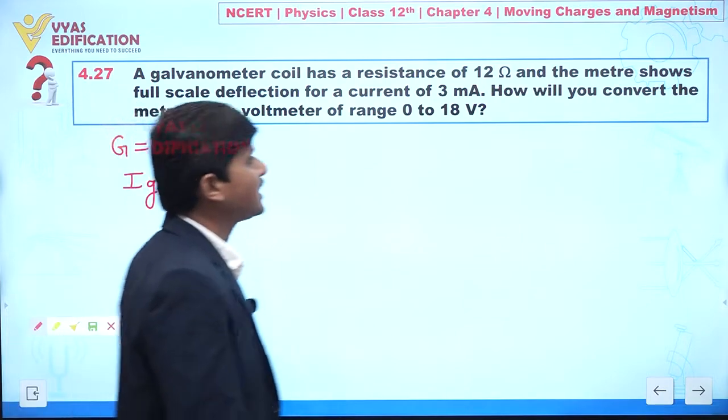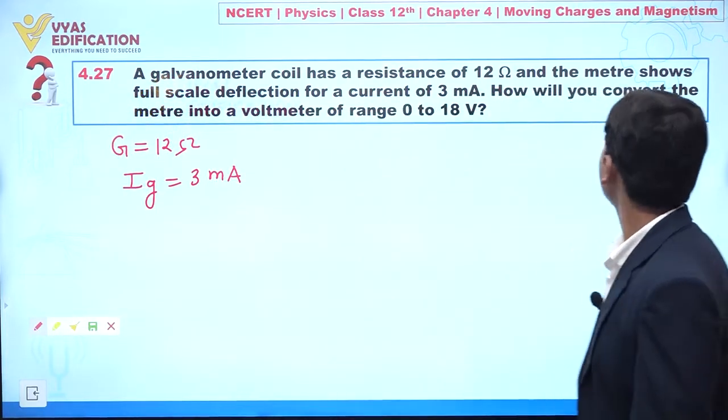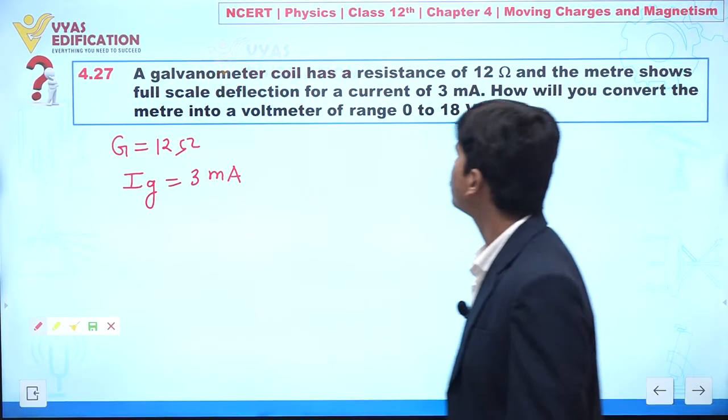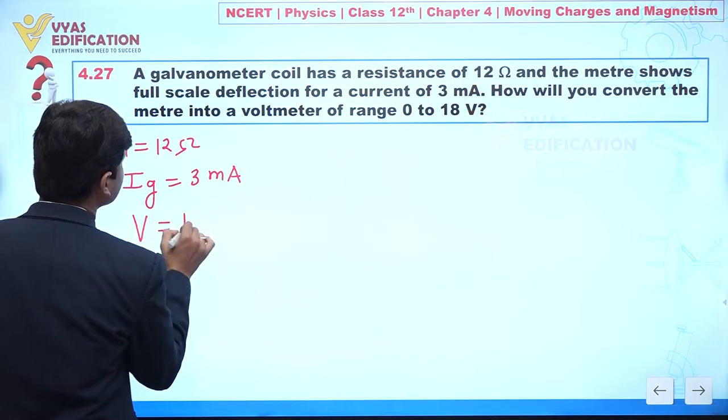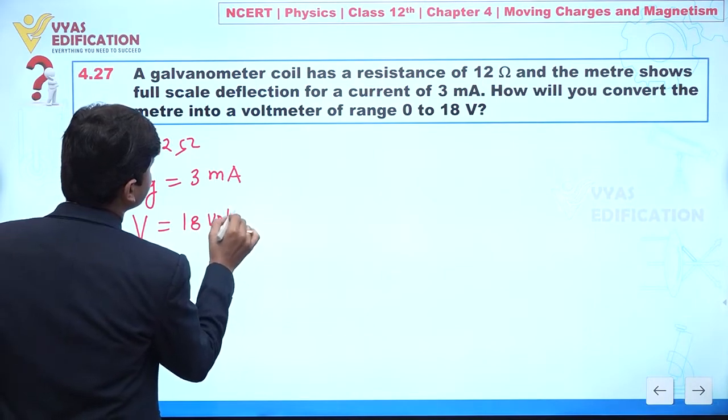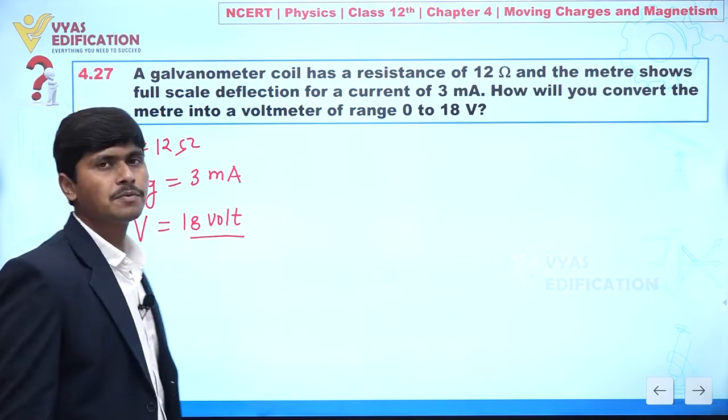Now in this question it is asked how will you convert the meter into a voltmeter of range 0 to 18 volt. This means we want to convert this galvanometer for showing the value up to 18 volt.